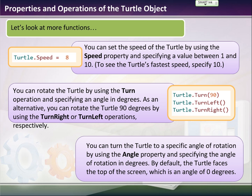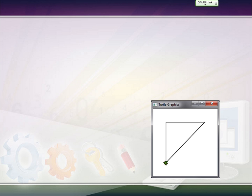You can turn the turtle to a specific angle of rotation by using the angle property, and specify the angle of rotation. By default, it always faces 0 degrees, which is up towards the top of the screen.